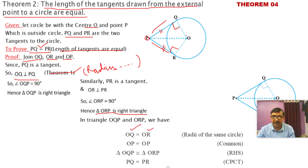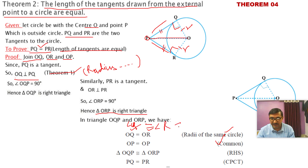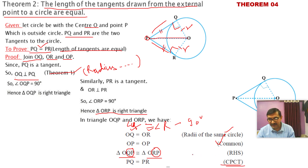OQ = OR because they are radii of the same circle. OP = OP — common in both triangles. Angle Q = angle R = 90°, as proved above. Therefore, triangle OQP is congruent to triangle ORP by the RHS congruency rule. By CPCT, PQ = PR. Hence proved.